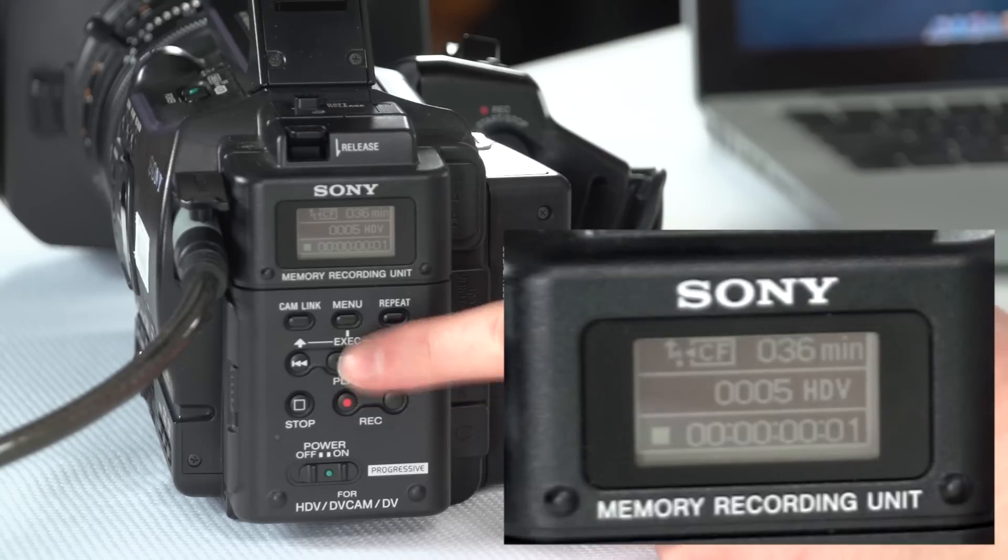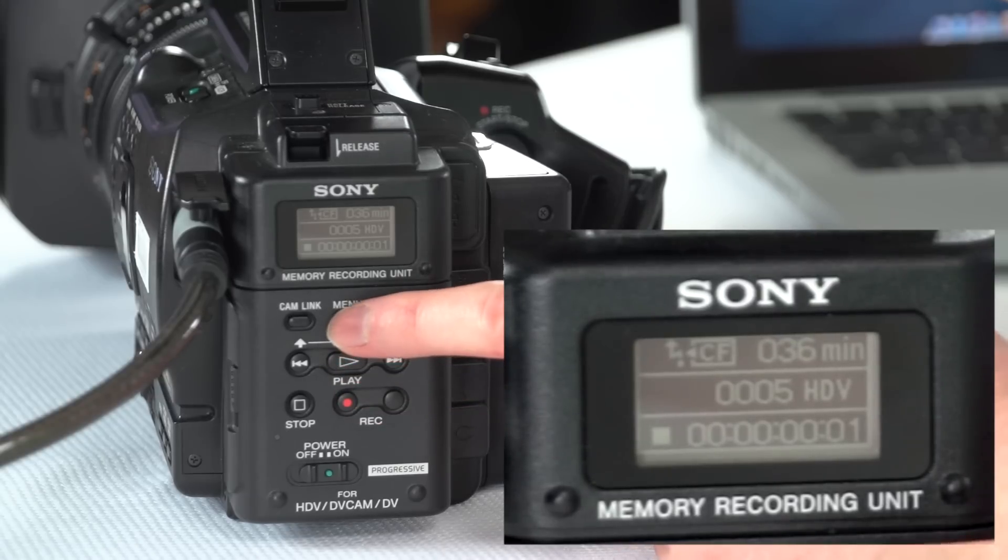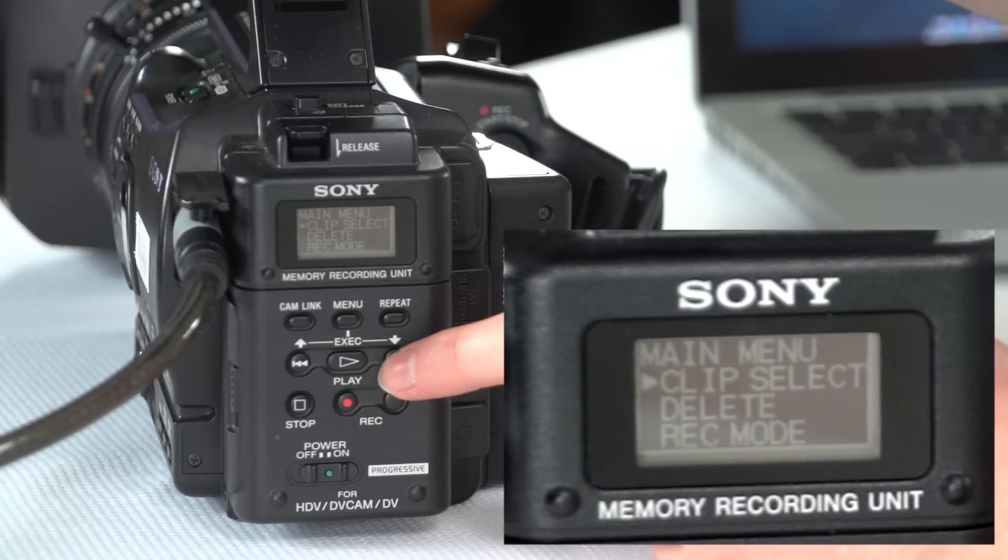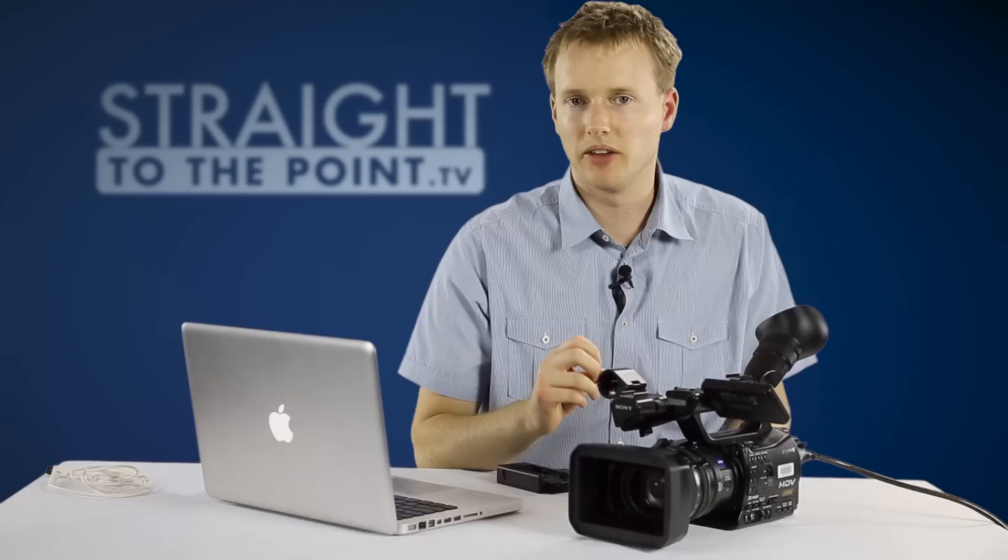So on the back of the memory card recorder we've got a menu button. We'll just touch on that and then we'll use the downward arrow over here to go down to our settings.